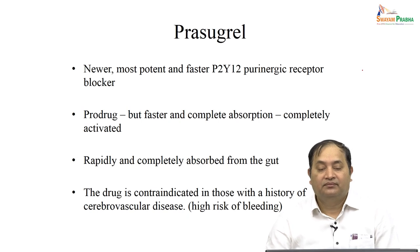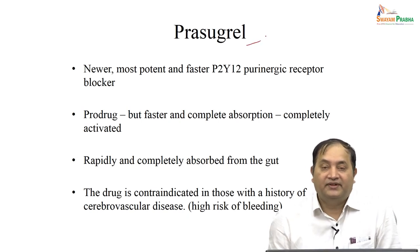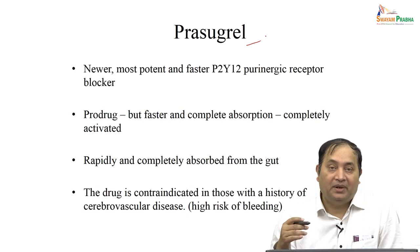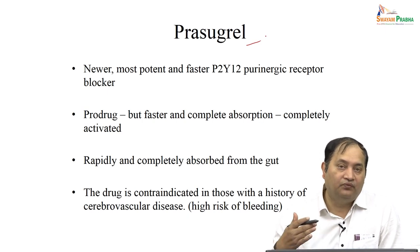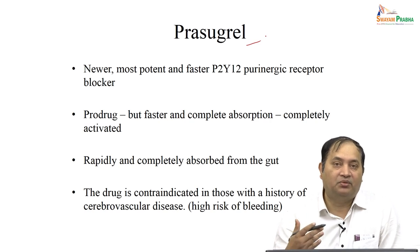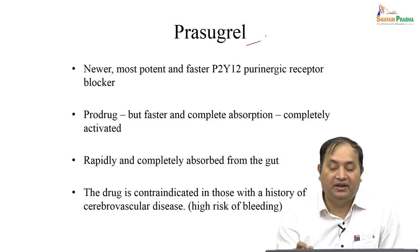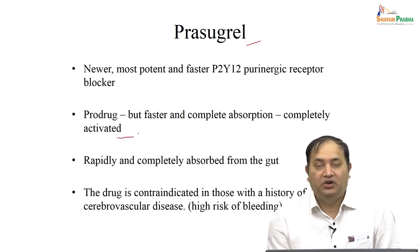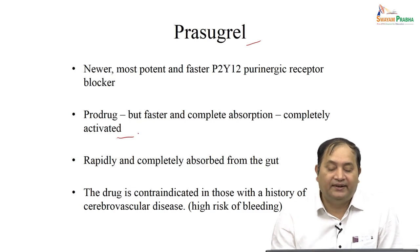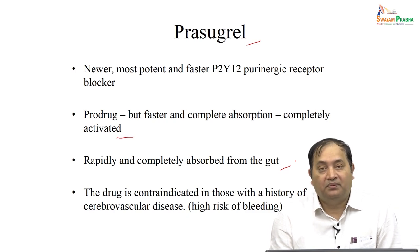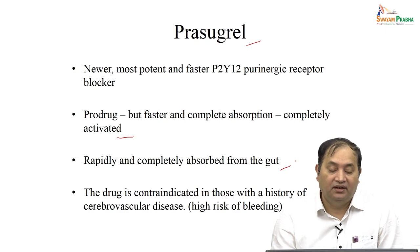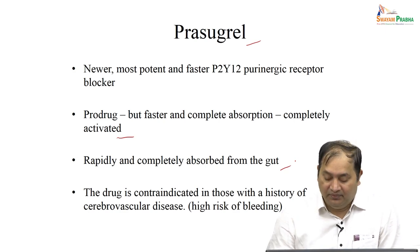Another drug is prasugrel. It is also a purinergic receptor blocker and a prodrug, but it has faster action. Compared to clopidogrel — which is only 50 percent absorbed and metabolized by CYP2C19 — prasugrel has complete absorption and is completely activated. It is rapidly and completely absorbed from the gut. This drug is contraindicated in those who have a history of cardiovascular disease with a high risk of bleeding.